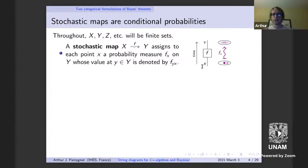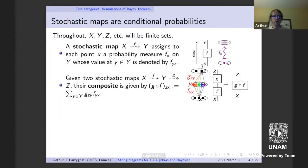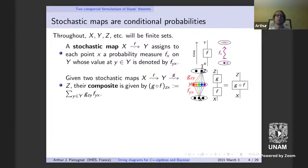In the string diagram notation, time is oriented upward. We can draw string diagrams for composition: if you give me two stochastic maps that match, we can take their composite — this is series composition. In terms of probabilities, you multiply the corresponding probabilities and then sum over all intermediate steps.